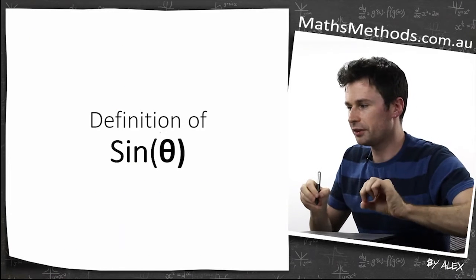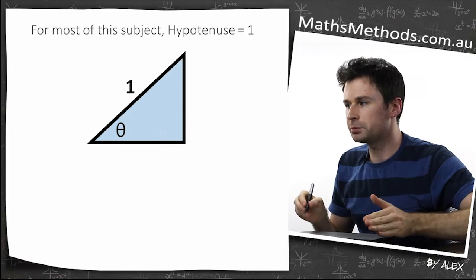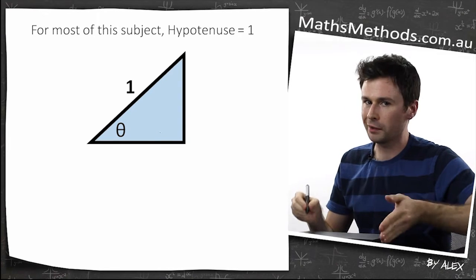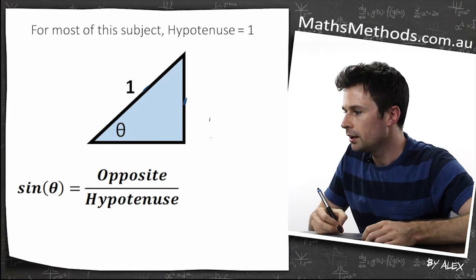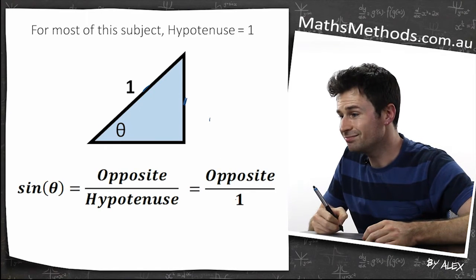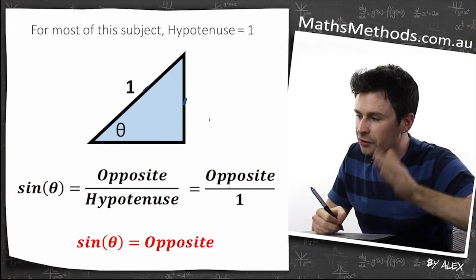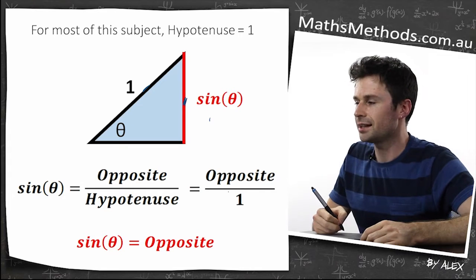So let's look at the real definition of sine. For most of this subject, hypotenuse will equal one. So if sine equals opposite divided by hypotenuse, it equals opposite divided by one. So sine theta just equals opposite, which is this one.